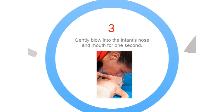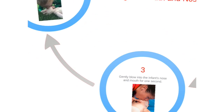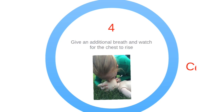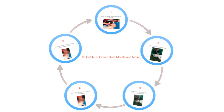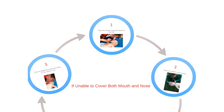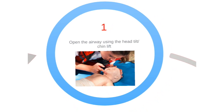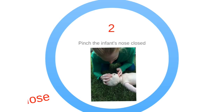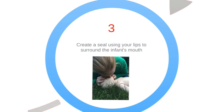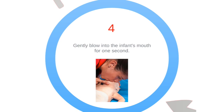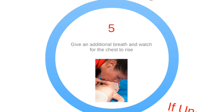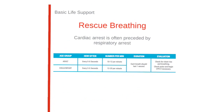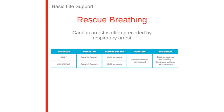Deliver the breath and watch the chest rise; readjust if necessary, then deliver a second breath. The next approach is only if you are unable to cover the infant's mouth and nose with your mouth. First open the airway. Pinch the nose shut, create a seal using your lips around the infant's mouth, deliver the breath, and watch the chest rise. Readjust the airway if necessary, then deliver your second breath.